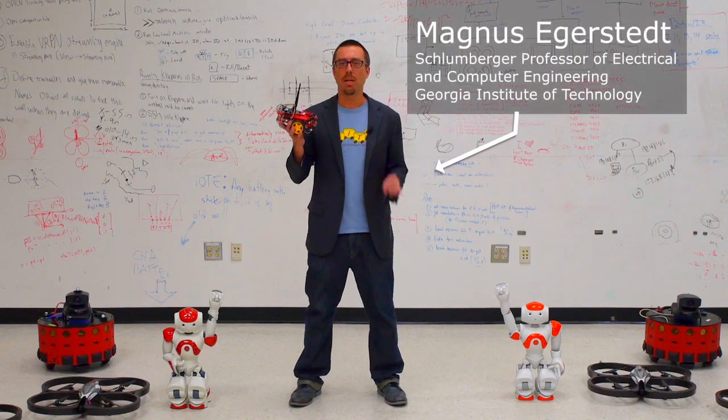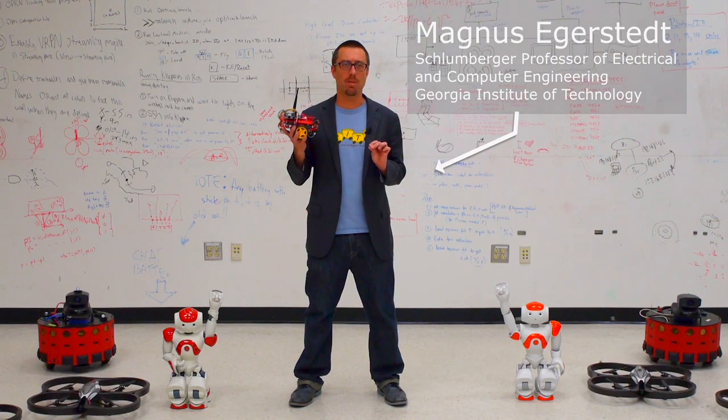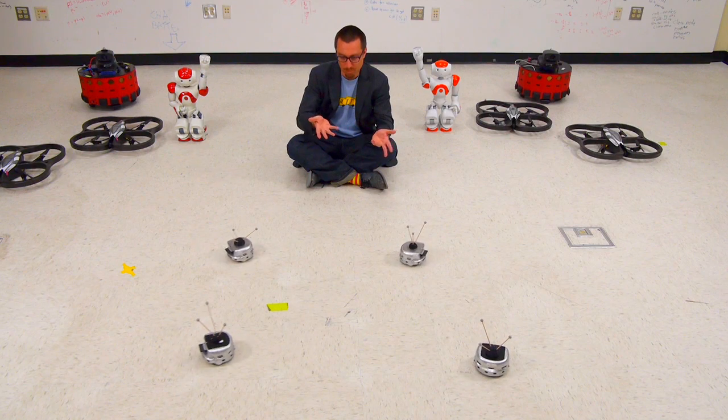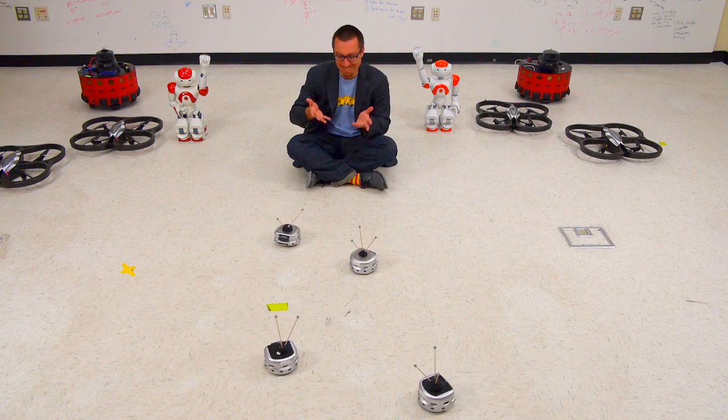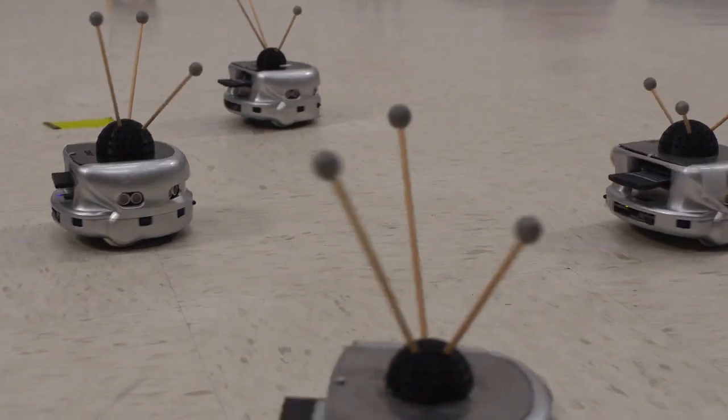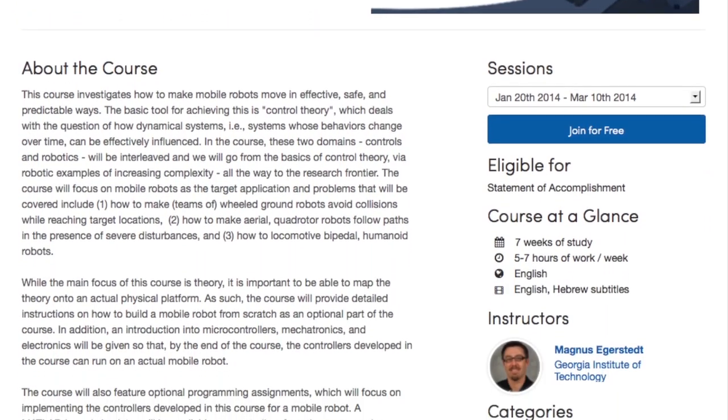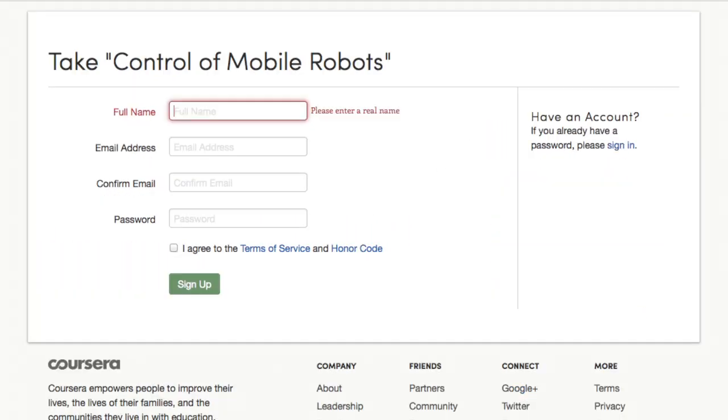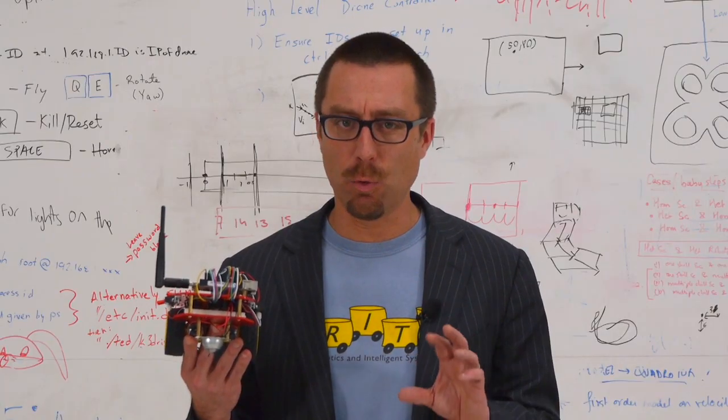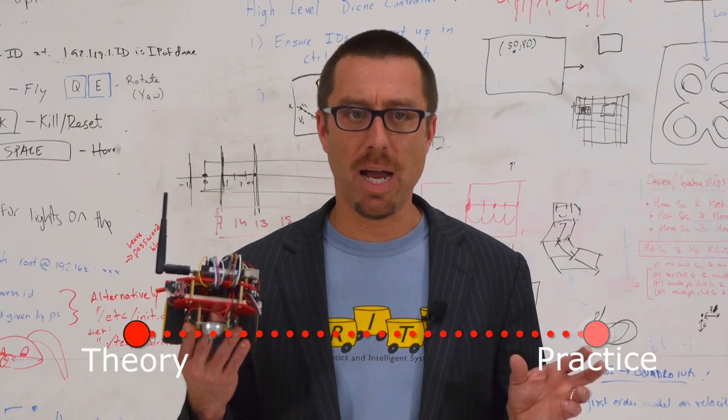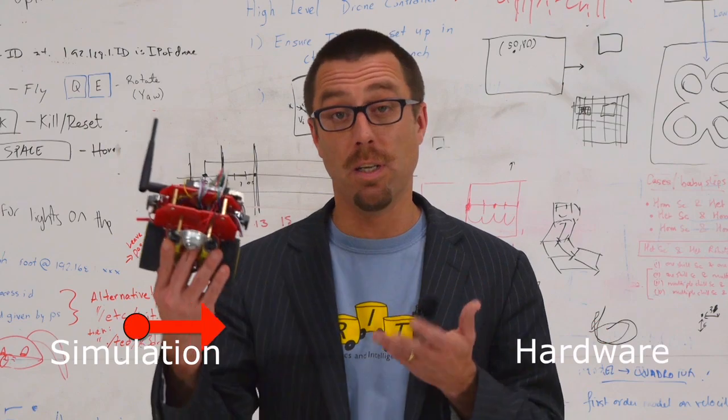Here at Georgia Tech we've partnered with Texas Instruments and MathWorks to develop a simulation package and an inexpensive open source robotics platform that accompanies our massive open online course on control of mobile robots available through Coursera. We've effectively closed the gap between theory and practice as well as simulation and hardware.